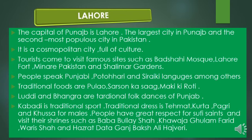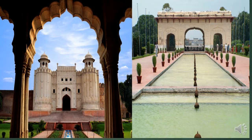We are going to see pictures of different places of Punjab. These are pictures of two famous places in Lahore: the first picture is of Lahore Fort and the second is of Shalimar Gardens. Traditional food of Punjab shown here includes Pulao, Sarson ka Saag, and Makki ki Roti. The traditional sport is Kabaddi, and Bhangra is the traditional folk dance of Punjab.